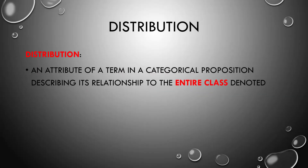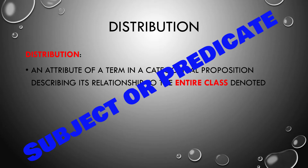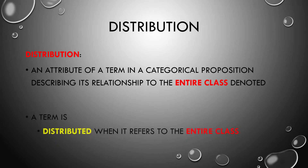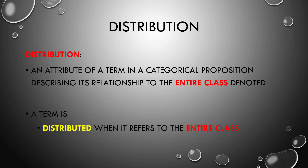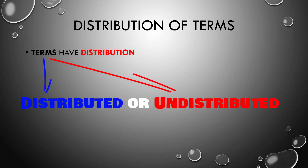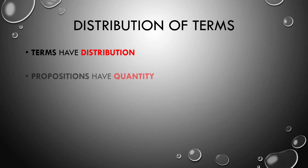So what is distribution? It's an attribute of a term — subject or predicate — in a categorical proposition, describing its relationship to the entire class denoted. A term is distributed when it refers to the entire class; otherwise, the term is undistributed. Notice it's the terms that have distribution — they're distributed or undistributed. Propositions don't; they have quantity — universal or particular.